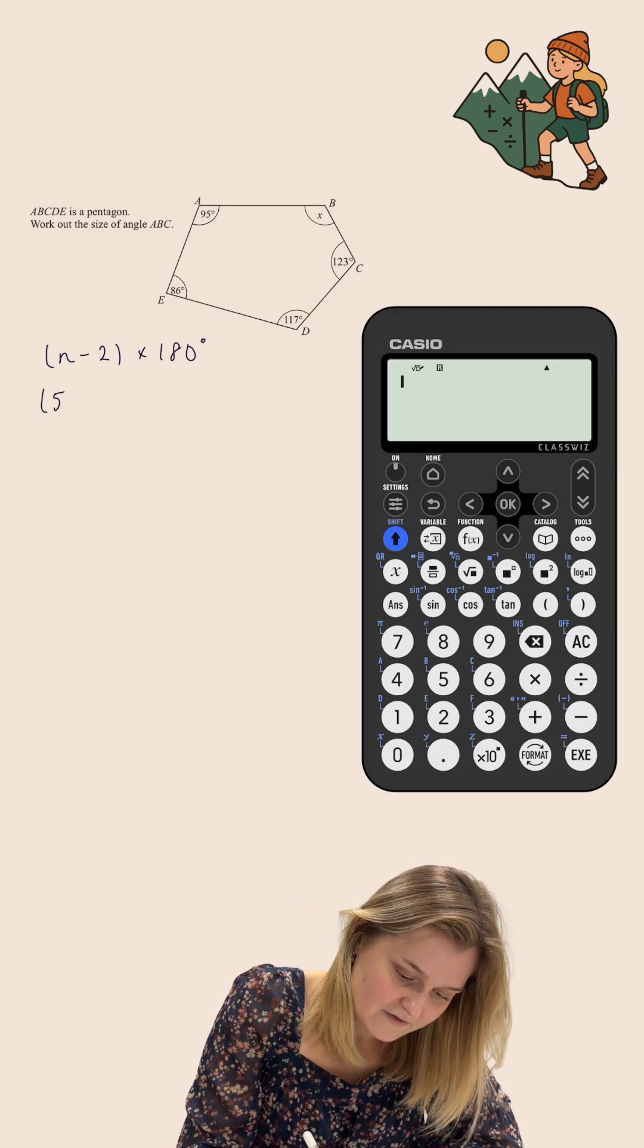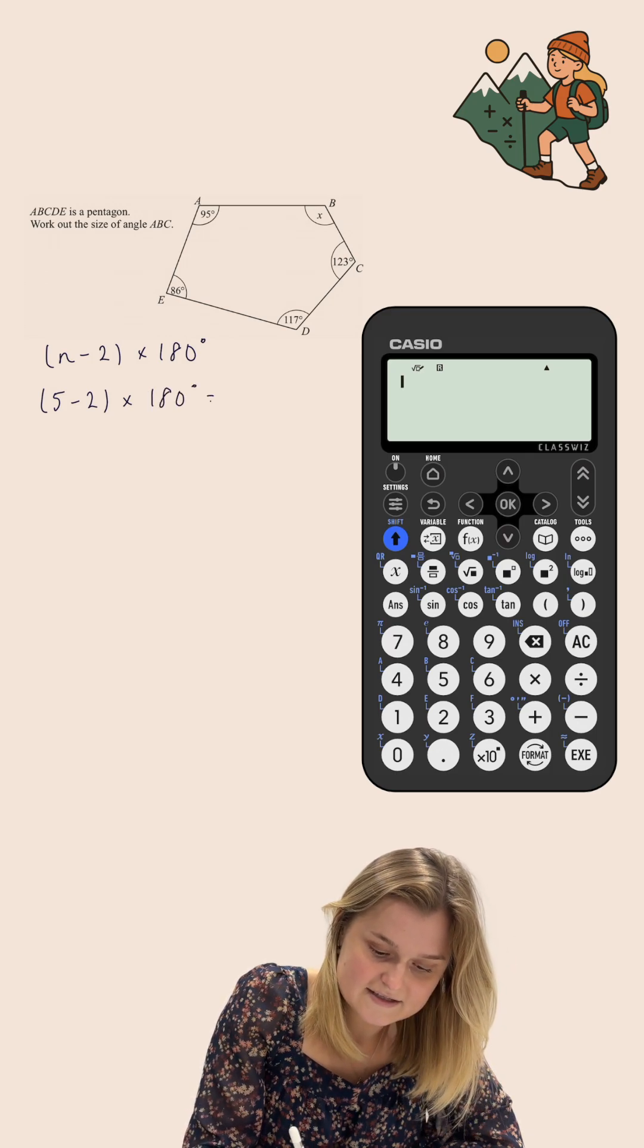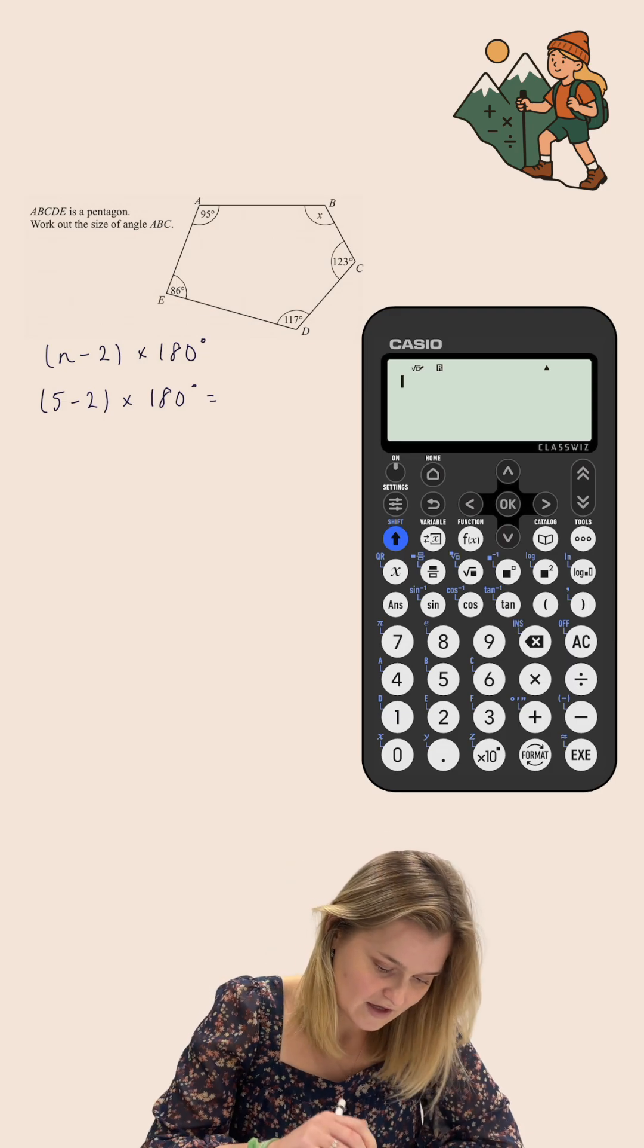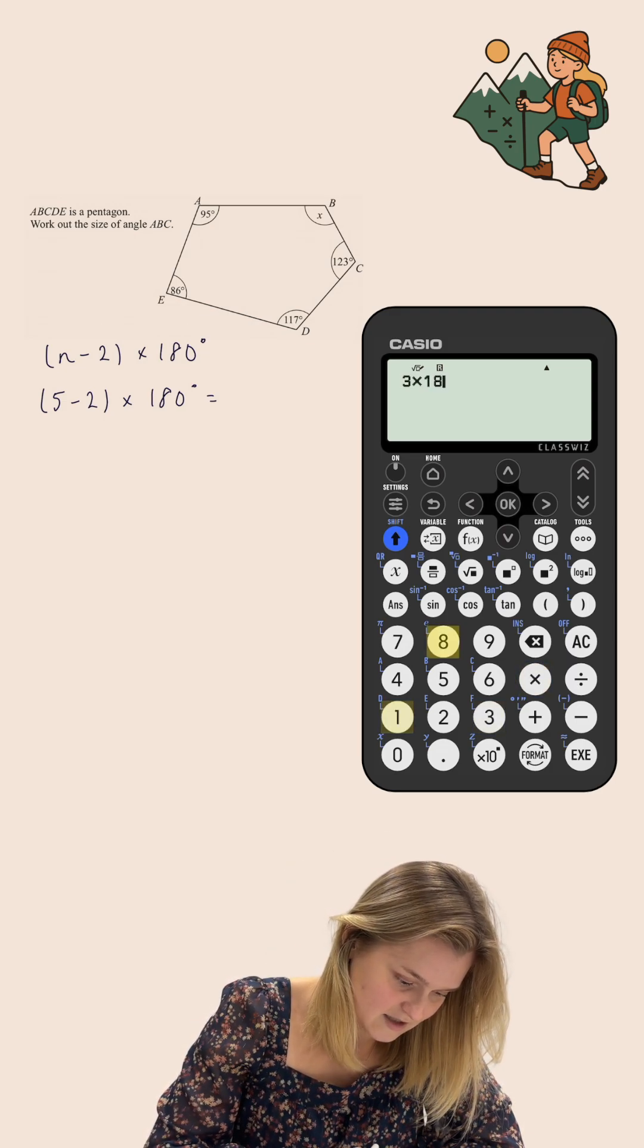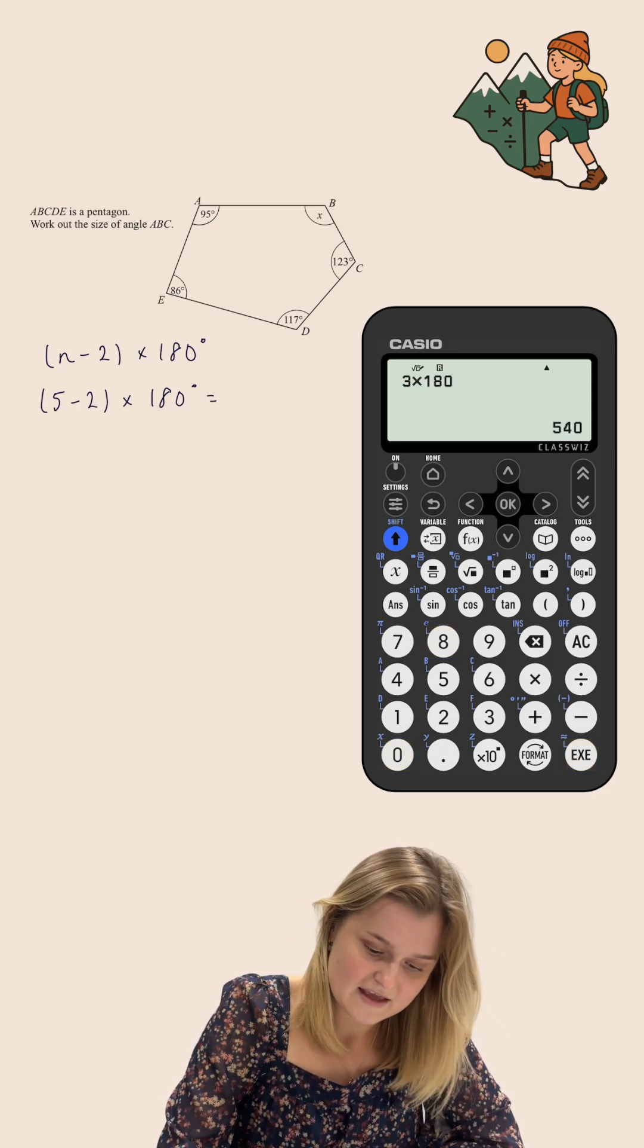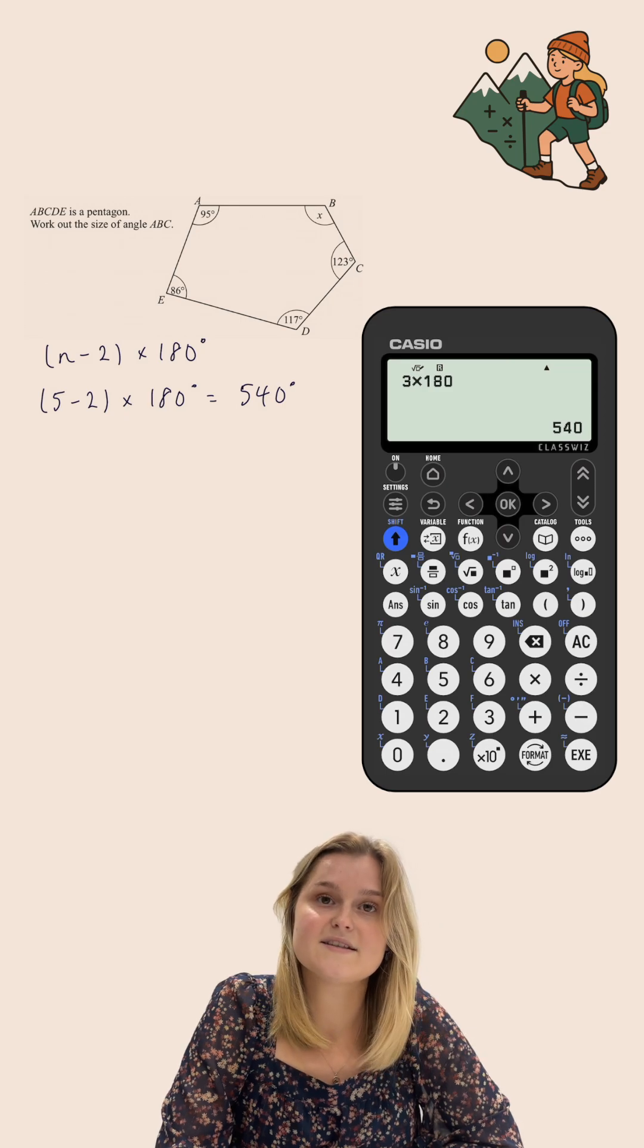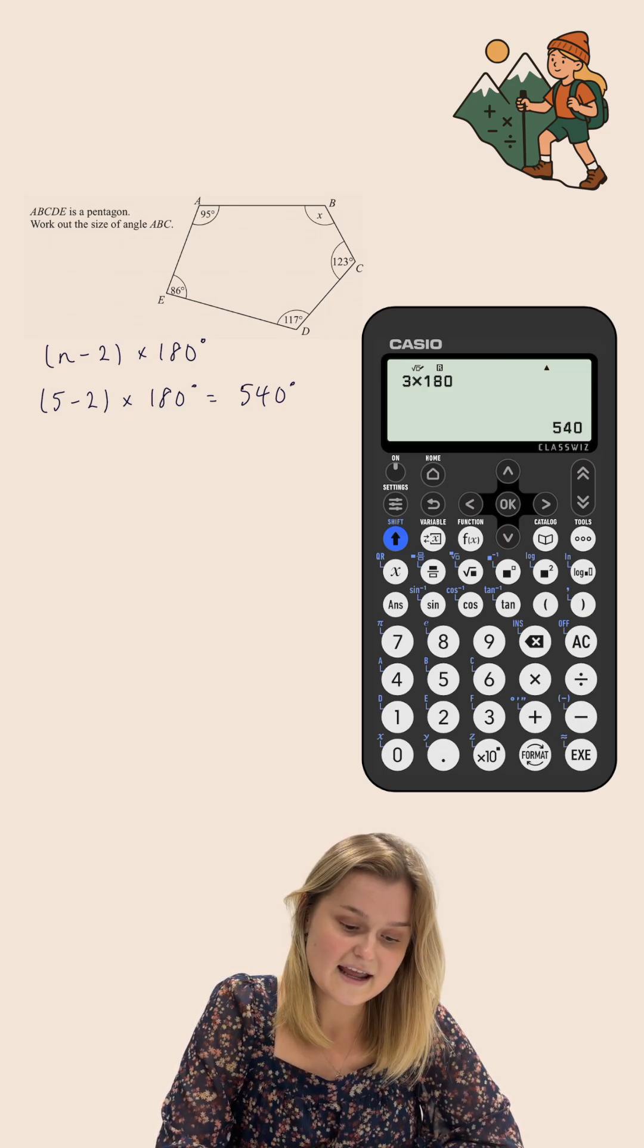I'm going to do 5 take away 2 multiplied by 180 degrees. This will tell me what the angles inside this shape should add up to. Well, 5 take away 2 is 3, so in my calculator, I'm going to type 3 times by 180. This gives me 540 degrees, so I know that the angles inside this pentagon should add to 540 degrees.